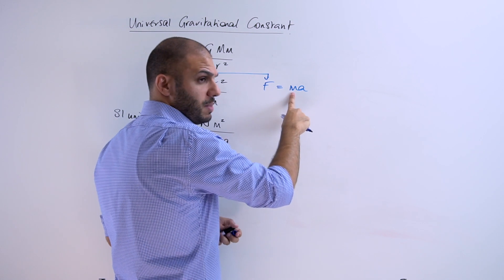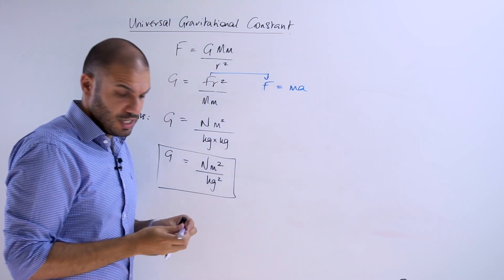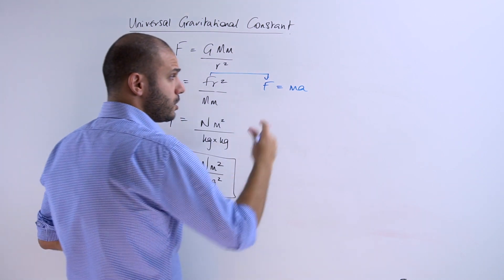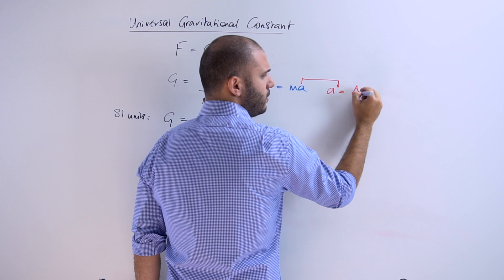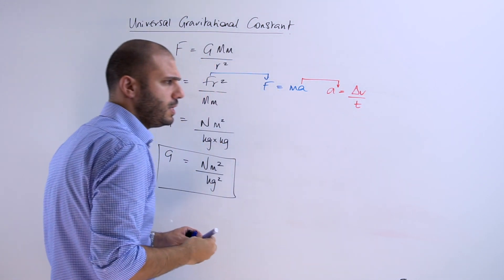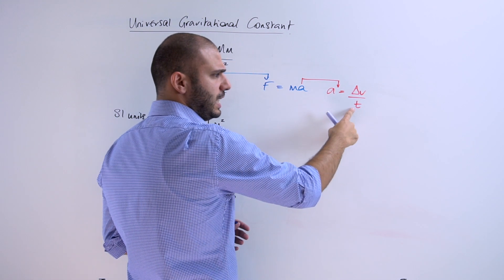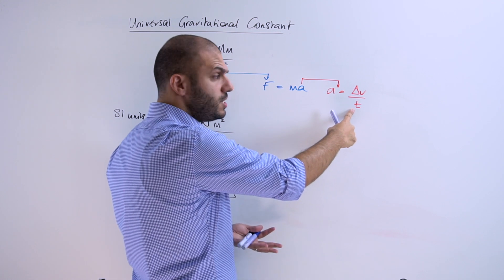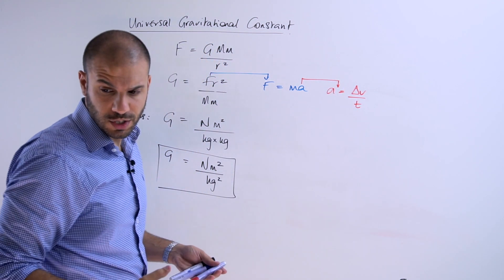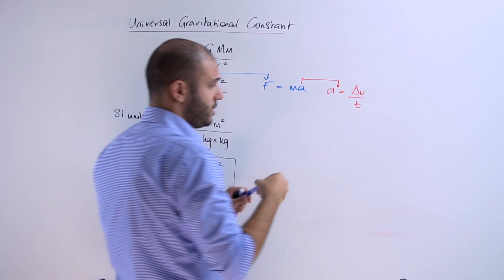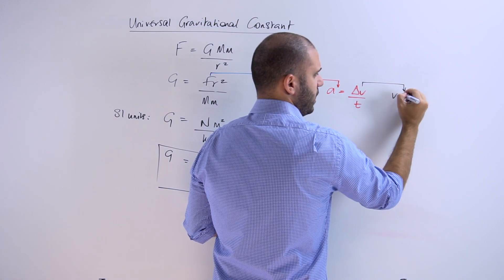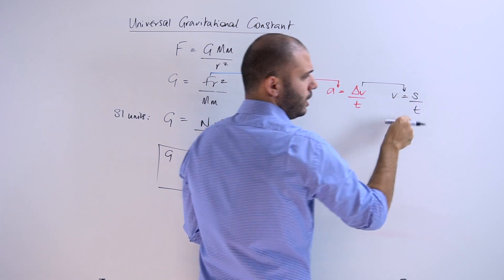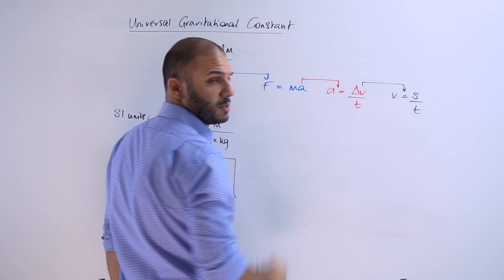Again, mass is a base quantity. Acceleration is not. So we do need to come up with an equation for acceleration. And acceleration we can write as change in velocity on time. This time round, we've got time, which is a base unit, but velocity is not. So one last equation should get us to all base quantities, displacement and time. And now we can start working our way backwards.